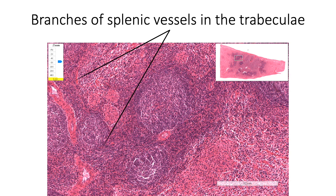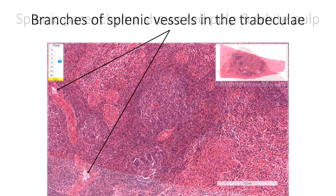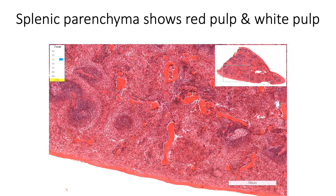Here we are seeing the branches of splenic vessels in the trabeculae. Splenic parenchyma is described to have two regions, the red pulp and the white pulp, based upon their appearance. In the freshly cut surface, white pulp appears as white opaque dots to the naked eye up to 1 mm in size, contrasting with the surrounding reddish-purple colored red pulp. In the routine H&E stained histology section, white pulp appears intensely basophilic in contrast to eosinophilic red pulp.